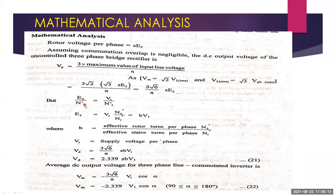From the transformer relation, E2/N2' = V1/N1', so E2 = b·V1, where b = N2'/N1' is the effective rotor-to-stator turns ratio per phase. Substituting, Vd = (3√6/π)·s·b·V1 ≈ 2.339·s·b·V1. The average DC voltage of the line-commutated inverter is Vdc = −(3√6/π)·V1·cos α = −2.339·V1·cos α, where the firing angle α operates between 90° and 180°.